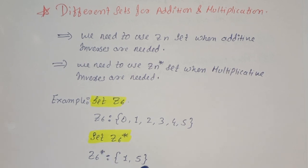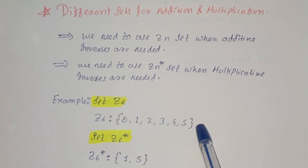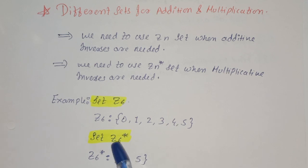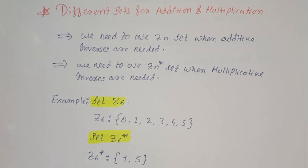Z6 consists of 0 to 5, all the numbers. And set z6 star consists only 1 and 5. Since we saw additive inverse, in additive inverse we can find all the terms in the set. And similarly in multiplicative inverse, we can find the terms, all the terms within z6. So these are only 2 terms in set z6 which have multiplicative inverse.